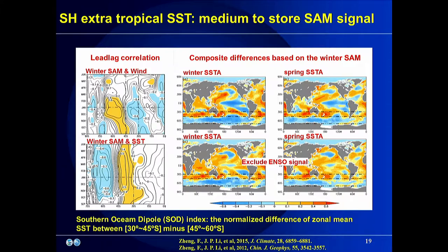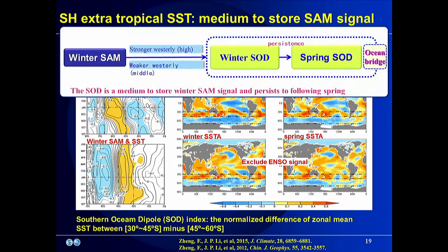Composite analysis gives similar results: the dipole-like sea surface temperature anomaly is significant both in winter and in spring. This dipole-like SST pattern is called the Southern Ocean Dipole, or SOD. To quantify SOD variability, we define an index which is a normalized difference of the zonal mean sea surface temperature between the middle and high latitudes. The SOD serves as a medium to store the winter SAM signal and persist to the following spring.